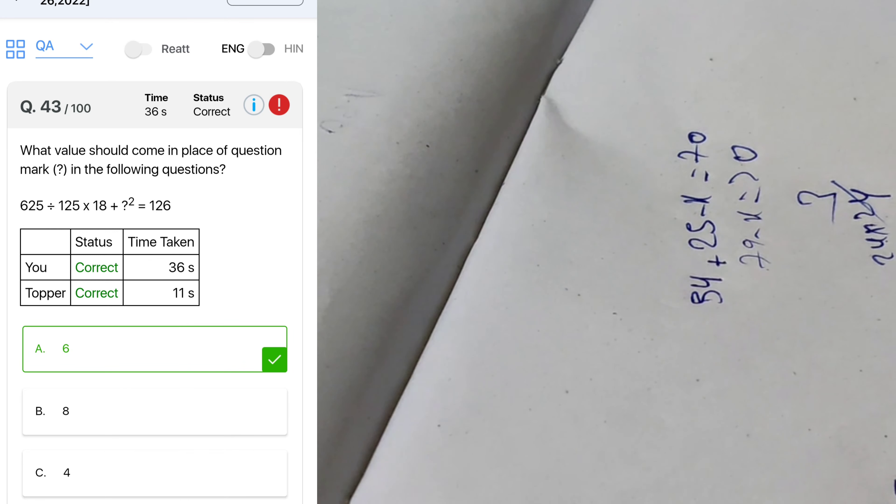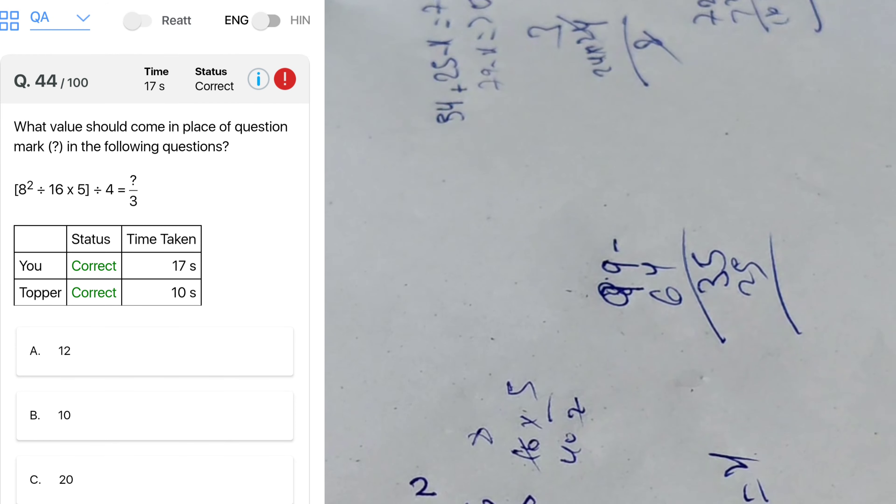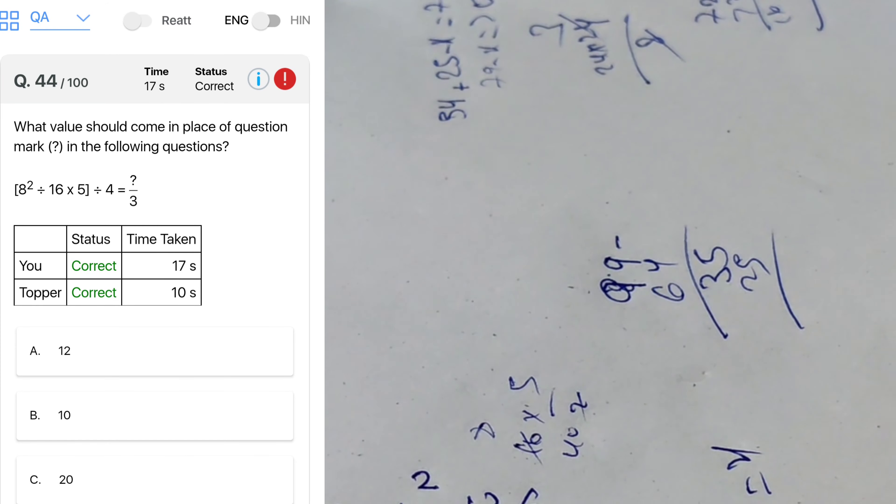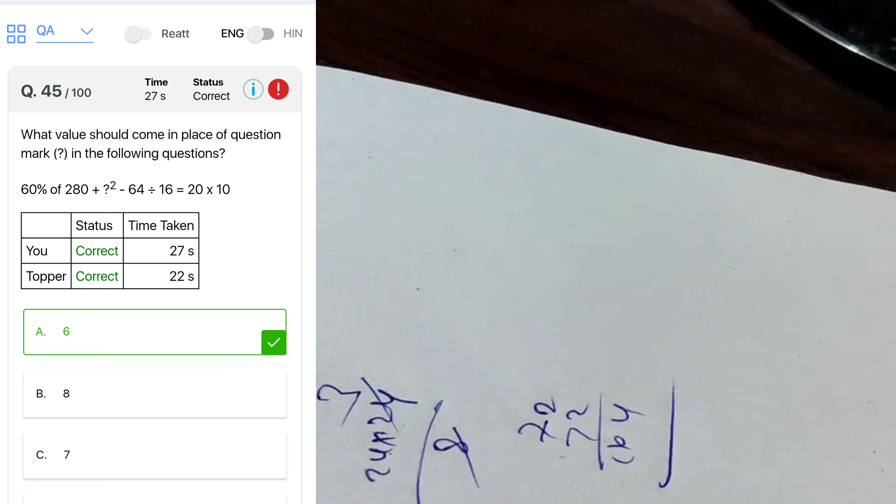6.25 plus 16 into 5 to 8, 40 divided by 8, so 12.5 divided by 2.5 is equal to x, so 5, x is 5, option B. So let's see, 625, 125, 625 divided by 125 is 6. So it's 5, 5 into 18, 90 plus x squared, 126 is 36 equal to x squared. So what is the value of x? It's 6. 8 squared means 64 divided by 16 into 5, so 4, so 20 divided by 4 is equal to x by 3, 5 into 3 it's 15, option D. Next question 28 into 6, 168, in 64, 168 plus x squared minus 64 plus 16 is 4, 164 plus x squared.